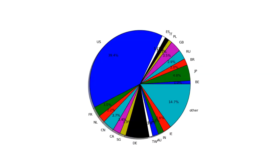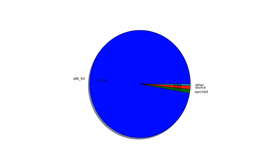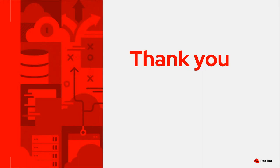One diagram shows requests by country, then we have a diagram by repository showing which repositories people are looking for, and a diagram by architecture — it's clearly x86_64 that most people are interested in. But this year, for the first time, you can actually see something else on the architecture diagram; before it was only x86_64. With this slide I'm already at the end. If there are any questions, I'm happy to answer about Mirror Manager, CentOS Stream 9, and Fedora.